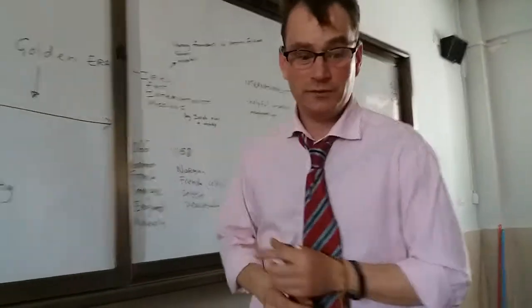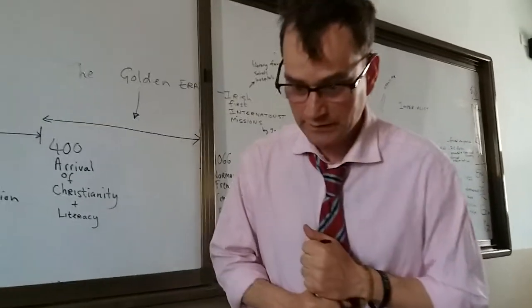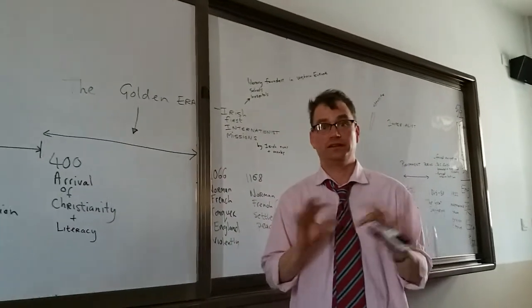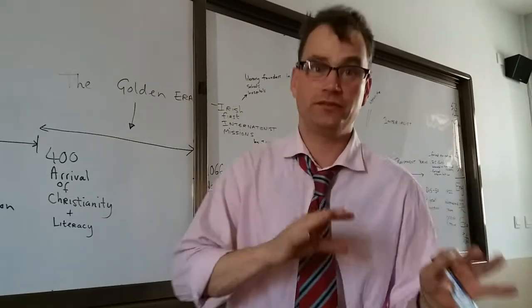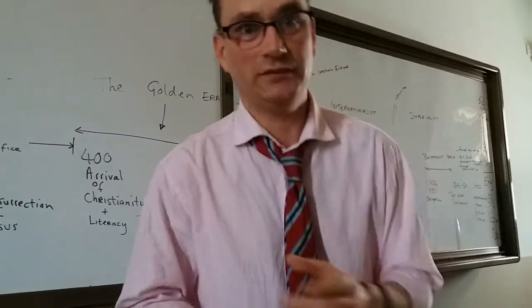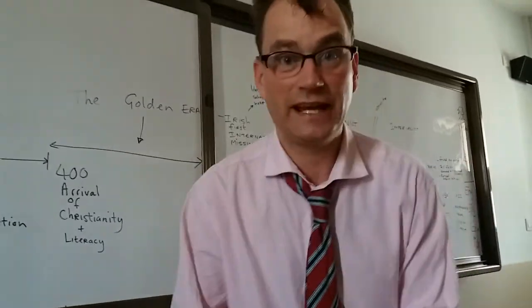1066, the Norman French defeat Harold at the Battle of Hastings. The English are Nordic, by the way. They're Danish. They're not the same as the French Celts. They're not the same as the Norman French, who have some Nordic blood in them, but mainly the main body of the army is French Celtic.